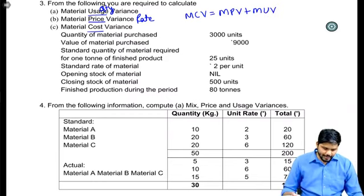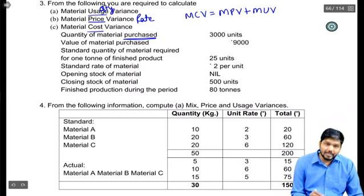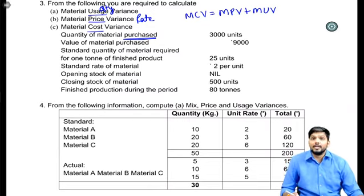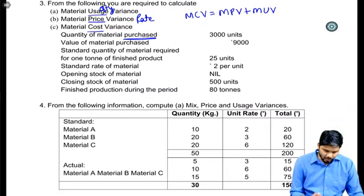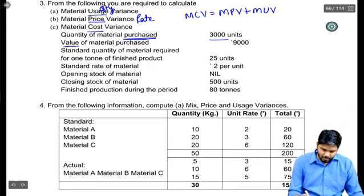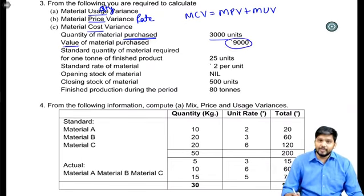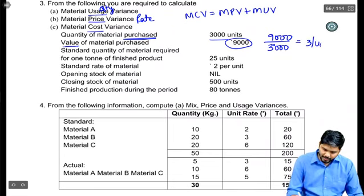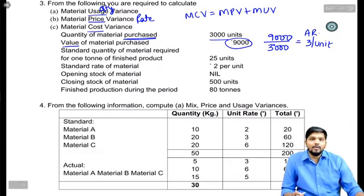Quantity of material purchased is 3000 units. Please try to understand — material purchased is written here. In standard costing, material purchased is not that important; what matters is material consumed. Quantity of material purchased is 3000 units. Value of material purchased — amount of material purchased — is 9,000 rupees. So 9,000 divided by 3000 gives rupees 3 per unit. This is my actual rate.